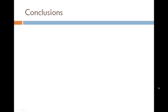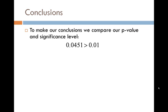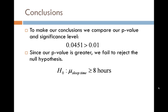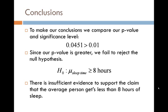So what conclusions can we make from finding all of this information? First we want to compare our p-value that we just found with the significance level that we're testing. Notice how our p-value is actually greater than that significance level. Now what that means in terms of our hypothesis is that we actually fail to reject the null hypothesis. It really helps to look back at what the null hypothesis was — in this case, it's that the mean sleep time is greater than or equal to 8 hours. Since I'm not rejecting that, it means that there is insufficient evidence to support the claim that the average person gets less than 8 hours of sleep.